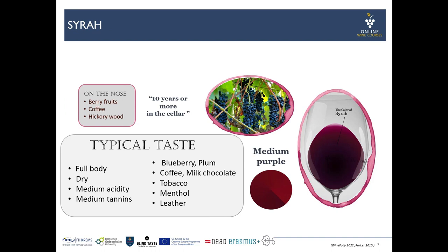The next variety is Syrah, or as it is called in Australia, Shiraz, planted on approximately 190,000 hectares worldwide. Typical taste characteristics are that this wine is usually full-bodied, also dry, with medium to moderate tannins and intermediate acidity. In terms of fruit characteristics we usually get blueberry and plum notes, but also coffee, milk chocolate, tobacco, menthol or leather notes. The nose is defined by berry fruits and coffee or even hickory wood. It can age 10 years or more. The color is described as a medium purple.